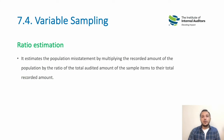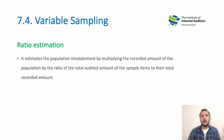The third approach is ratio estimation, where we look at what percentage of error exists in a given sample and then project that percentage to the overall population.